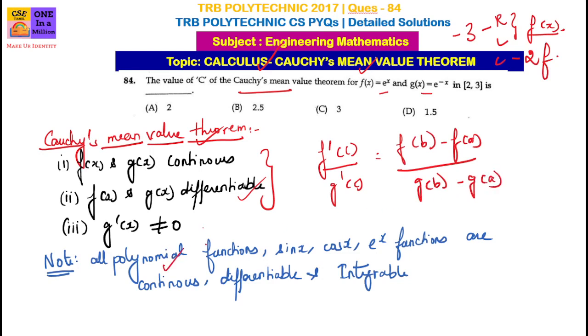For any question involving polynomial functions, sin x, cos x, or exponential functions, all of them are continuous and differentiable, so the conditions are automatically satisfied.